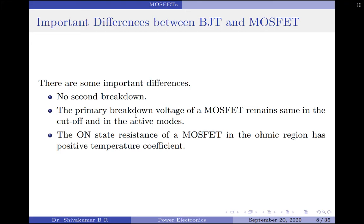Lastly, the on-state resistance of a MOSFET in the ohmic region has a positive temperature coefficient, which allows paralleling of MOSFETs without any special arrangement for current sharing. On the other hand, the collector-to-emitter saturation voltage of a BJT has a negative temperature coefficient, making parallel connection of BJTs highly complicated.